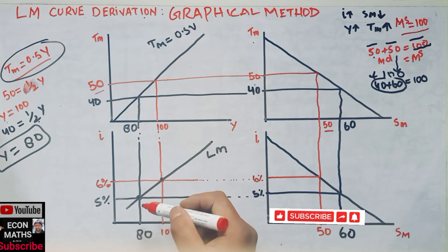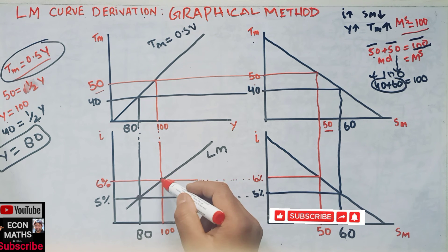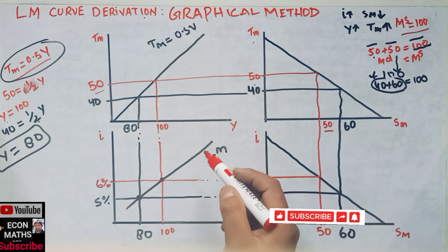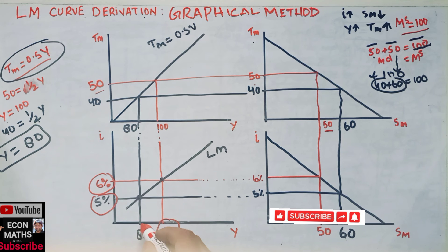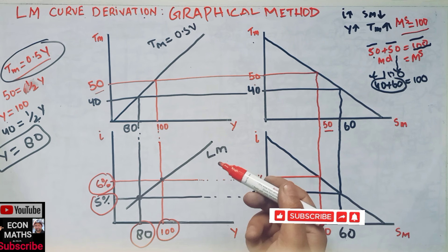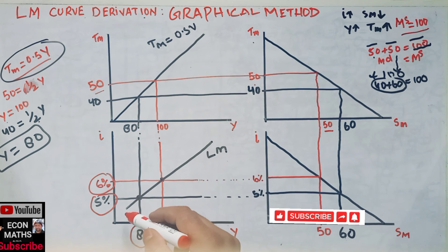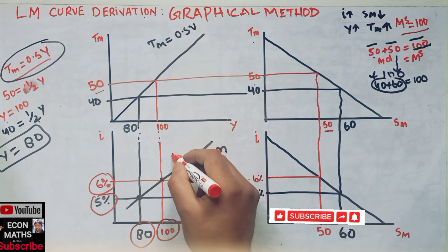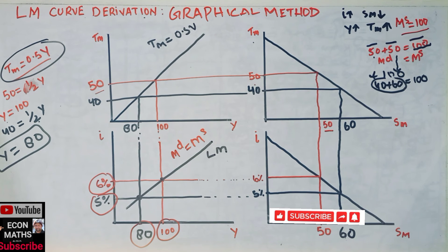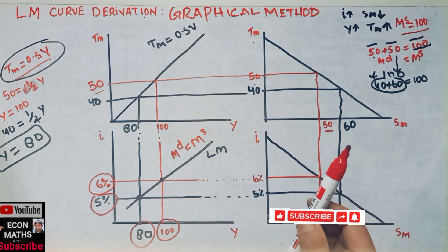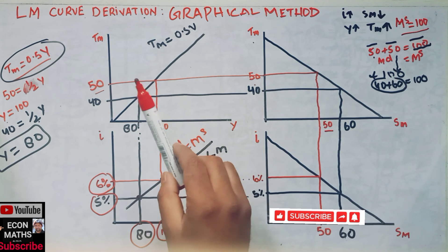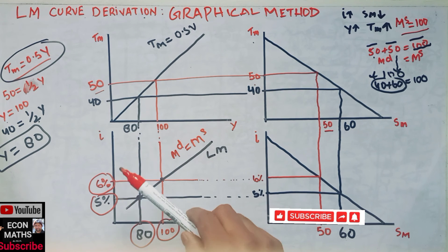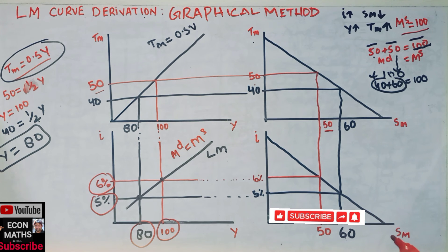Every point on the LM curve shows us a point where demand for money equals supply of money. The LM curve is a different combination of rate of interest and income where demand for money equals supply of money — it is a locus of points where each point shows demand for money equals supply of money.